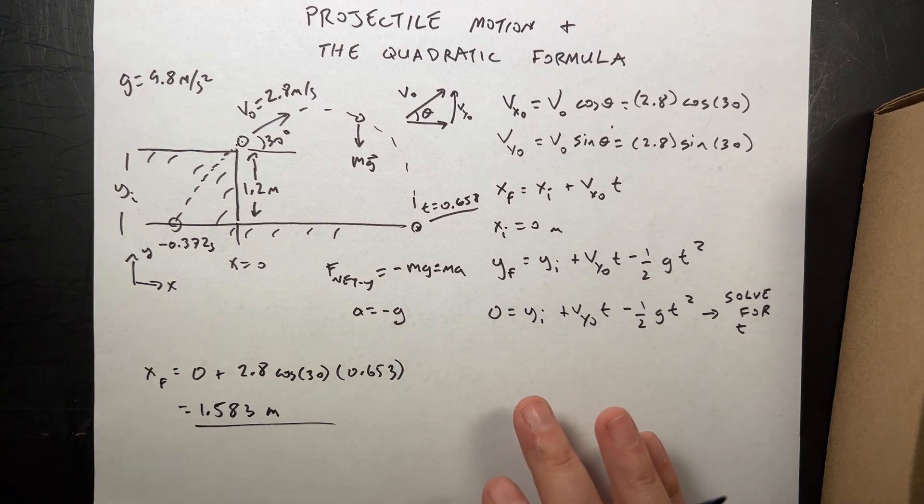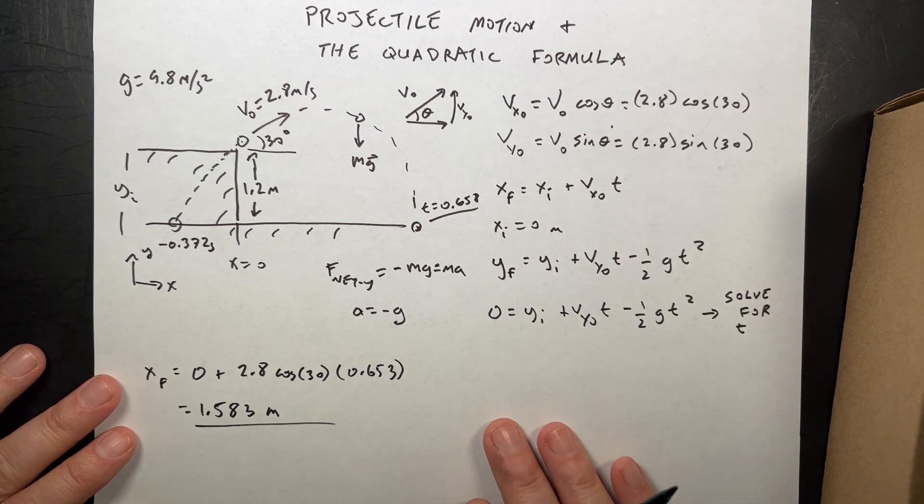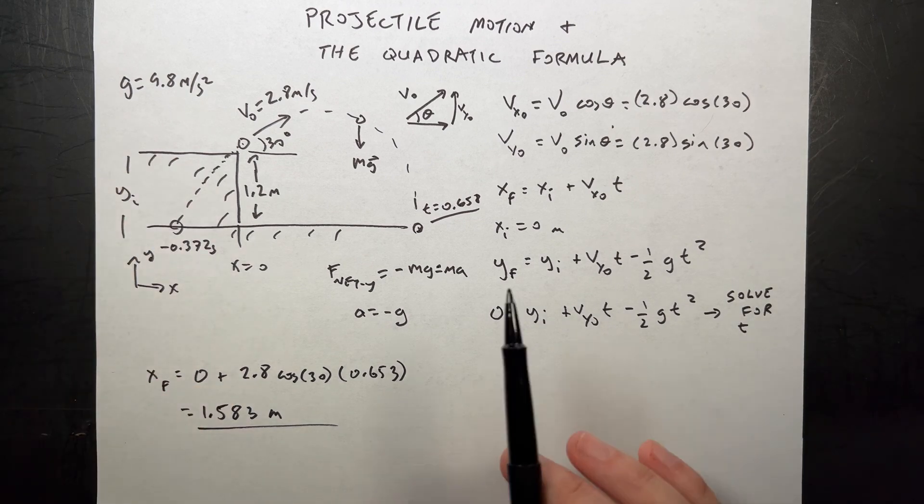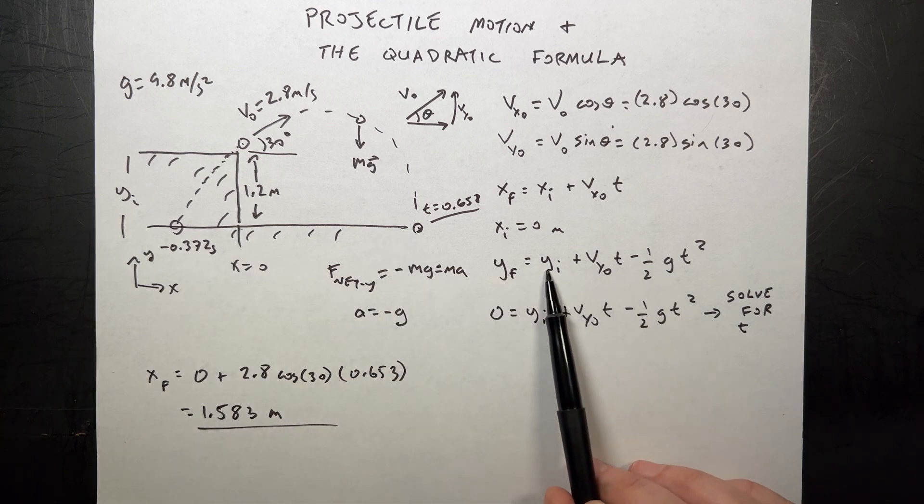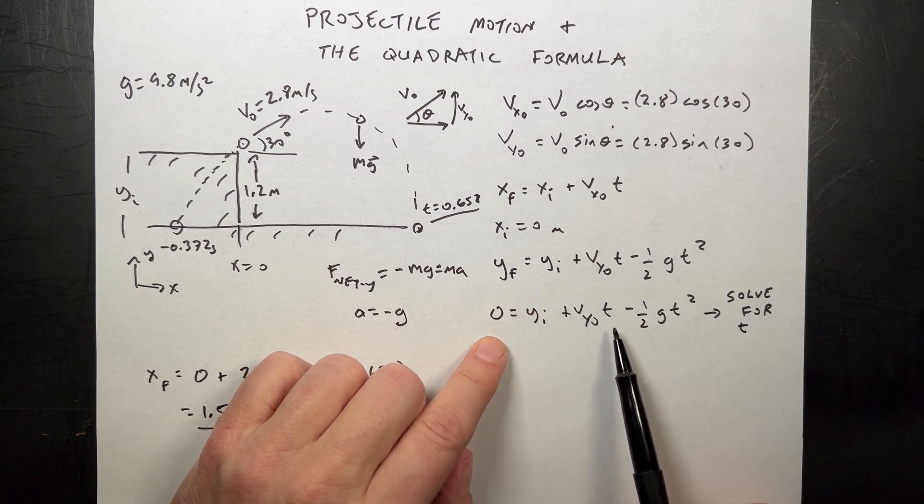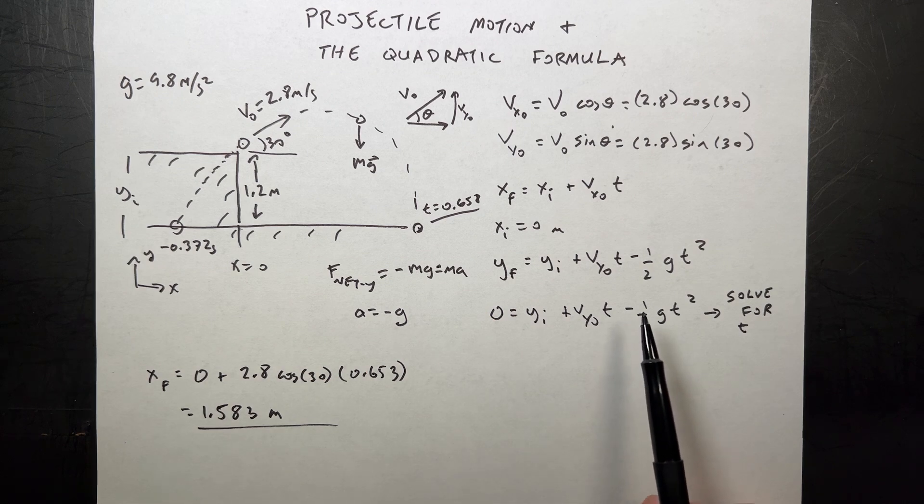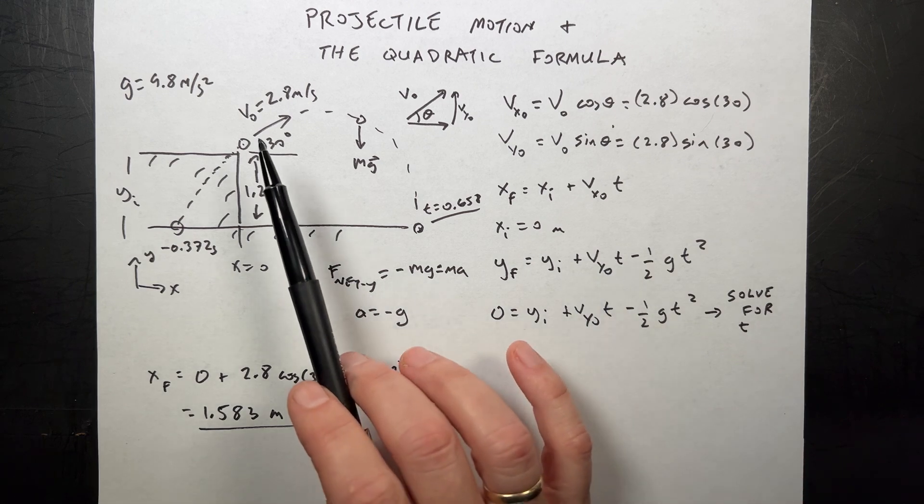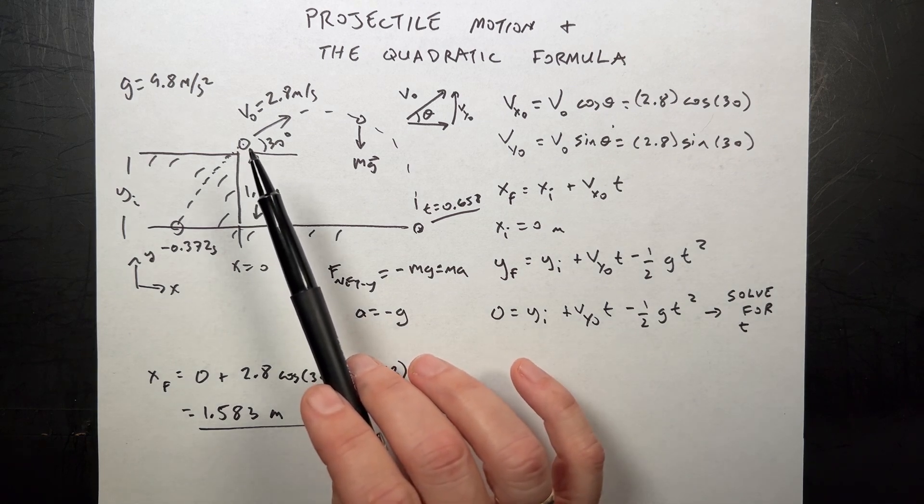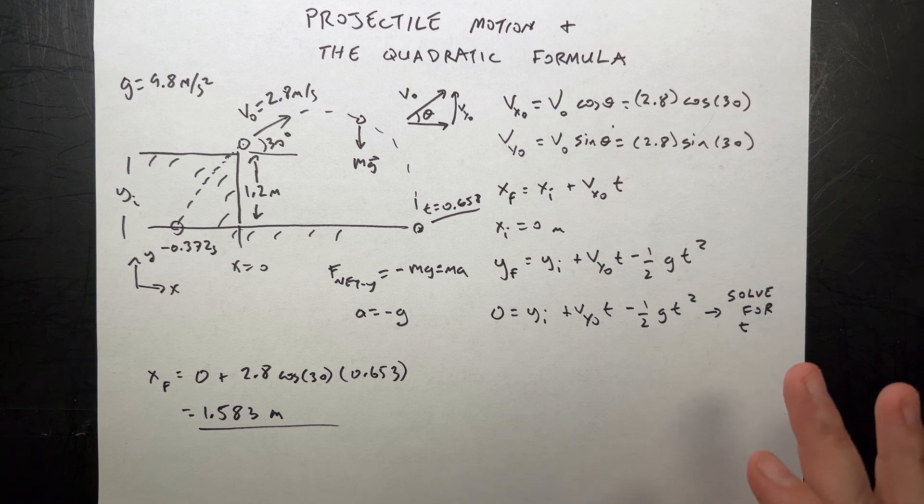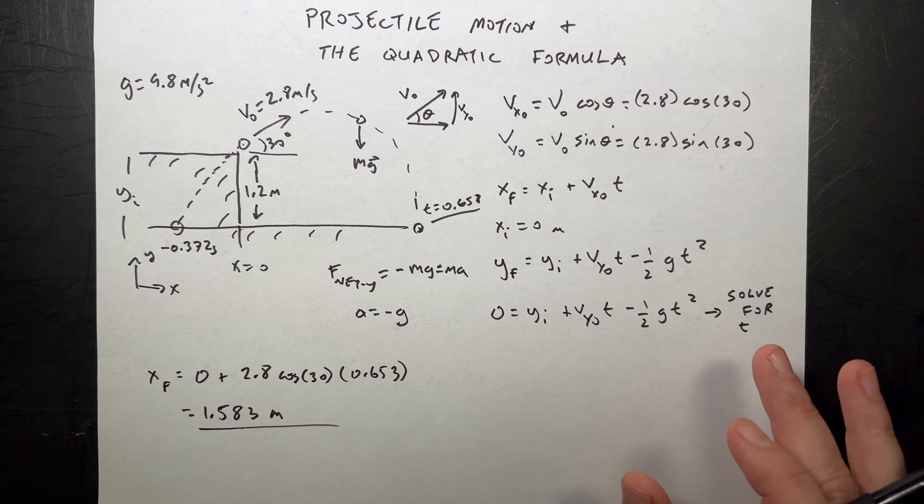And that's how to use the quadratic formula to solve for a projectile motion problem. I'd like to point out, if you start from the ground level and end at the ground level, this term is zero. You don't need the quadratic equation because you don't have a constant term, you can divide both sides by t. Also, if the initial y velocity is zero, you don't need the quadratic equation. It's only if it starts at a height above ground level and has a y velocity initial. There are cases where you can still use the quadratic equation with c equals zero or b equals zero. Hope that helps.